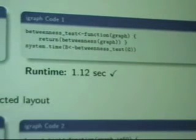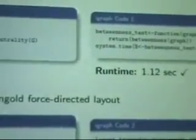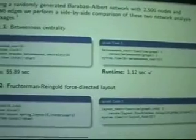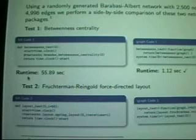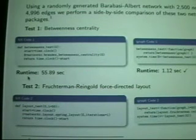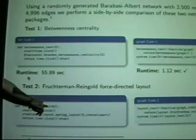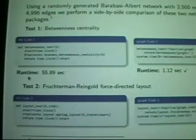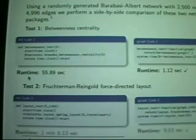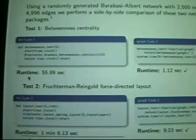Next we test the Fruchterman-Reingold force-directed layout — a visualization algorithm that tries to show the balance of network structure without overlapping edges, making the most visually appealing layout the computer can produce. I set iterations at 50. R is much faster again — considerably so. Python took over a minute; R did the same thing in just nine seconds.